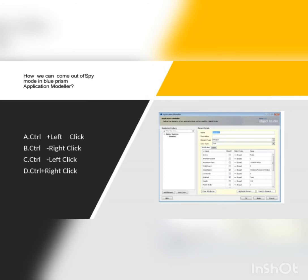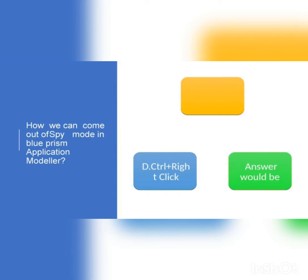When using spy mode — you guys will know about the different spy modes — to exit spy mode you have to use Ctrl+Right Click. You can cancel and come out of spy mode using Ctrl+Right Click.